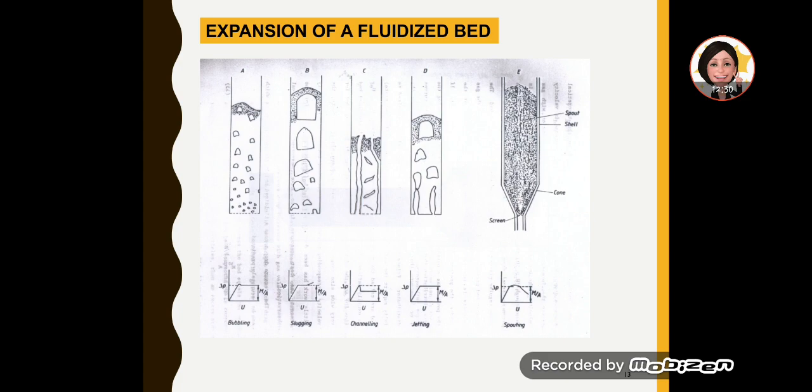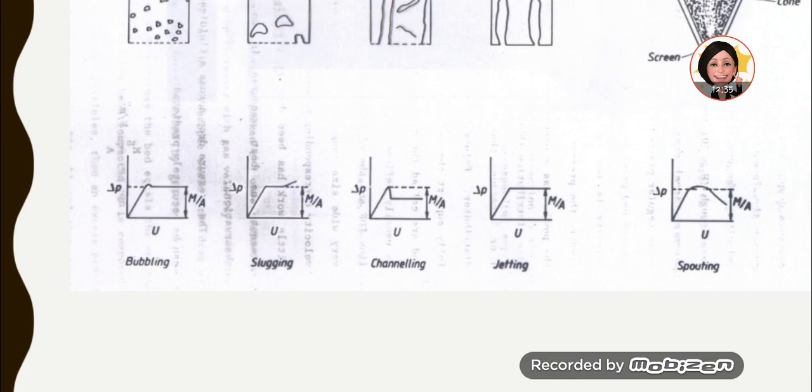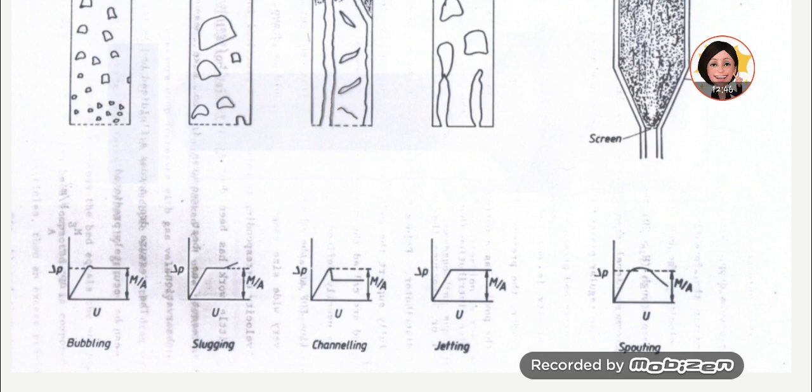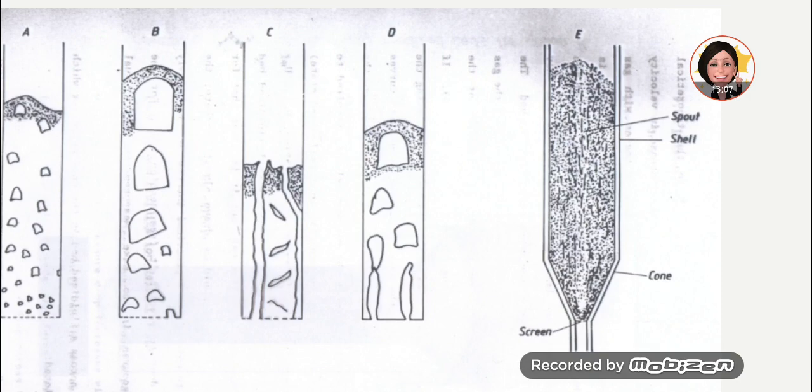This expansion of fluidized bed can give different pressure drop and velocity mappings. For bubbling, simple bubbling, slugging, channeling, jetting, and spouting, we have different types of patterns, the relationship between pressure drop and velocity.